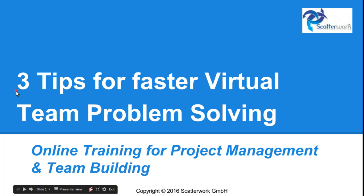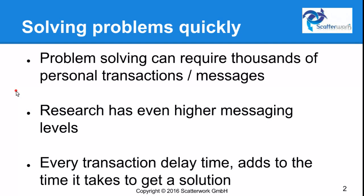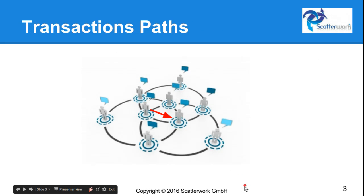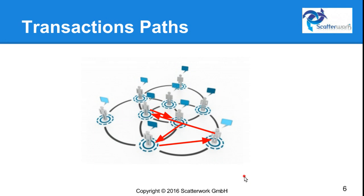Three tips for faster virtual team problem solving. Problem solving can require thousands of personal transactions or messages, and research has even higher messaging levels. Every transaction delay adds to the time it takes to get solutions. We can see that with this transaction path diagram, where the message goes from one person to the second to the third — all of them searching for the solution, hopefully getting a little closer each time.